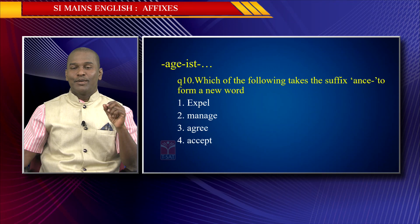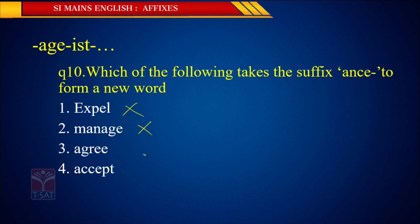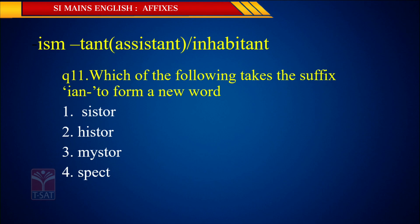Practice with more suffixes: '-age' as in bondage, wastage, lineage; '-ist' as in pessimist, optimist, ophthalmologist, dentist. Next question: which of the following takes the suffix '-ance' to form a new word? Options: expel, manage, agree, accept. Expel-ance — no. Manage-ance — no. Agree-ance — no. Acceptance — yes! If you are right, people will accept your idea. So the answer is acceptance.